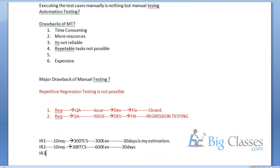In Release 3, with another 300 test cases, I need to execute 900 test cases in 30 days. Executing 900 test cases in 30 days is not at all possible manually. To overcome this drawback, we take the help of automation testing.